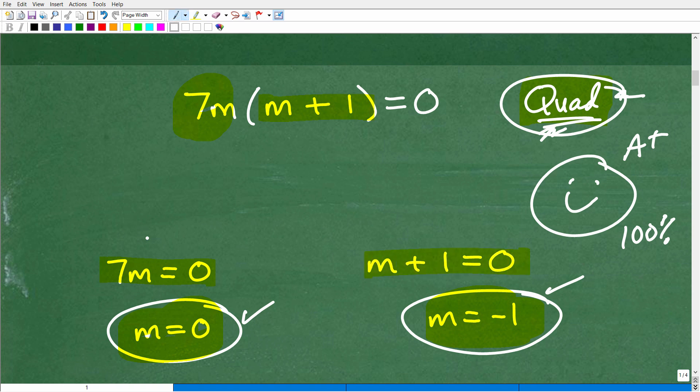And then here I just solve for M. So, 7M is equal to zero. M is equal to zero there. And M plus one is equal to zero. Of course, M is equal to negative one. So, this is an illustration of what we call the zero product property.